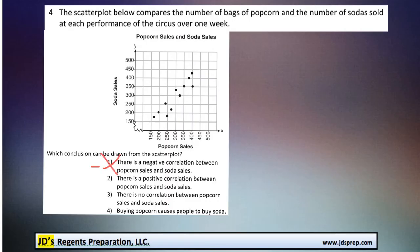And the second option says that there is a positive correlation between popcorn sales and soda sales. And as we've probably figured out by now, that's definitely true because as popcorn increases, so does the soda sales. So that would definitely be the correct answer.